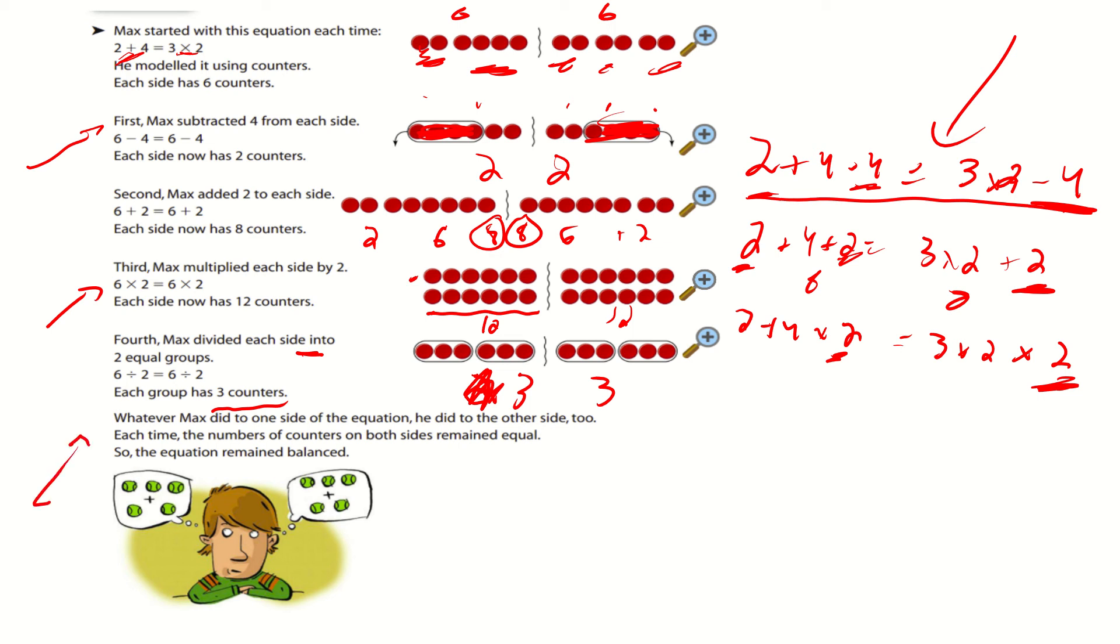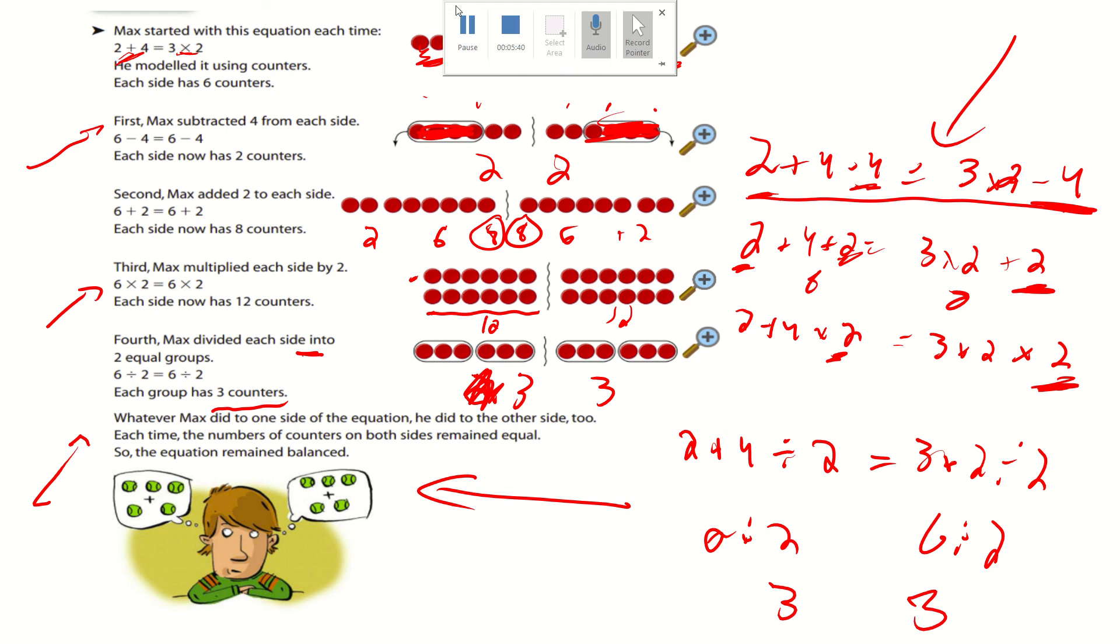So, here's the big thing of this lesson on this part so far. Whenever Max did to one side of the equation, he did to the other side too. Each time, the number of counters on both sides remained equal. So, the equation remained balanced. So, for instance, this last one, it was 2 plus 4 divided by 2. This was 3 times 2 divided by 2. BEDMAS, you go 6 divided by 2. Here you would not do BEDMAS. So, you'd go 6 divided by 2, and you'd get 3 and 3. So, that's preservation of equality.